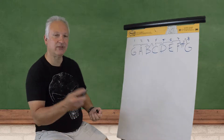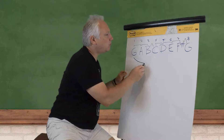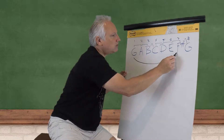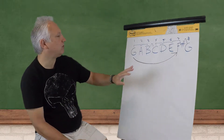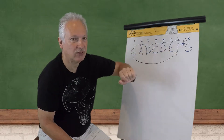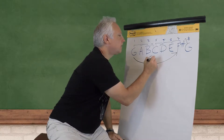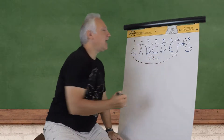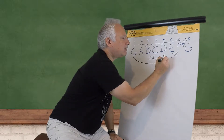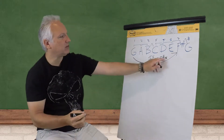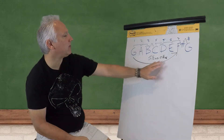Our first seventh interval will be from the G note — the root note — all the way up to the seventh note, the F sharp, in our G major scale. Any major scale will have this, by the way. The root note up to the seventh note in the major scale is a distance of five and a half whole steps, and that equals what we know as a major seventh interval. It's written as major seventh — the M is bigger than the seven.